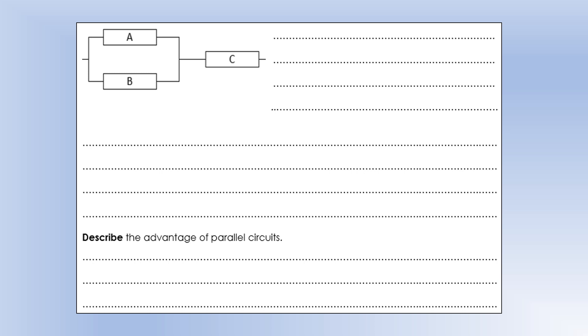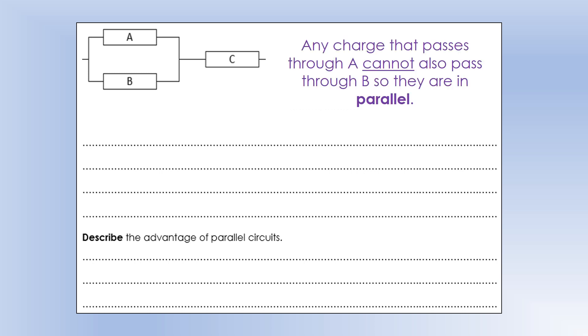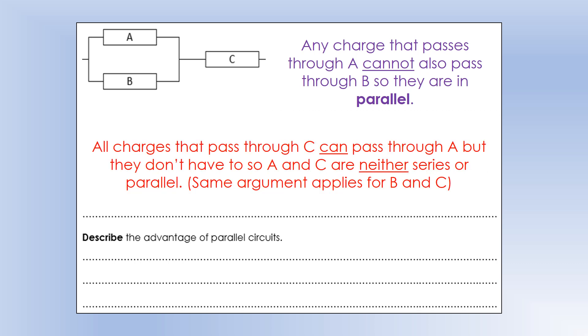The one people get wrong is a diagram that looks like this. So in this circuit, any charge that goes through A cannot pass through B. So we describe A and B as in parallel, and most people are happy with that. That's fine. The difficulty is people then start to describe relationships between A and C. So in this circuit, every charge is going to have to go through C. But only some of them are going to go through A. So we wouldn't describe A and C as being in either series or parallel. There's just no word to describe what those are. And it's the same thing with B and C as well. All the charges go through C, but only some of them go through B. So again, we wouldn't describe those as either series or parallel. We just don't try and describe that as a relationship.